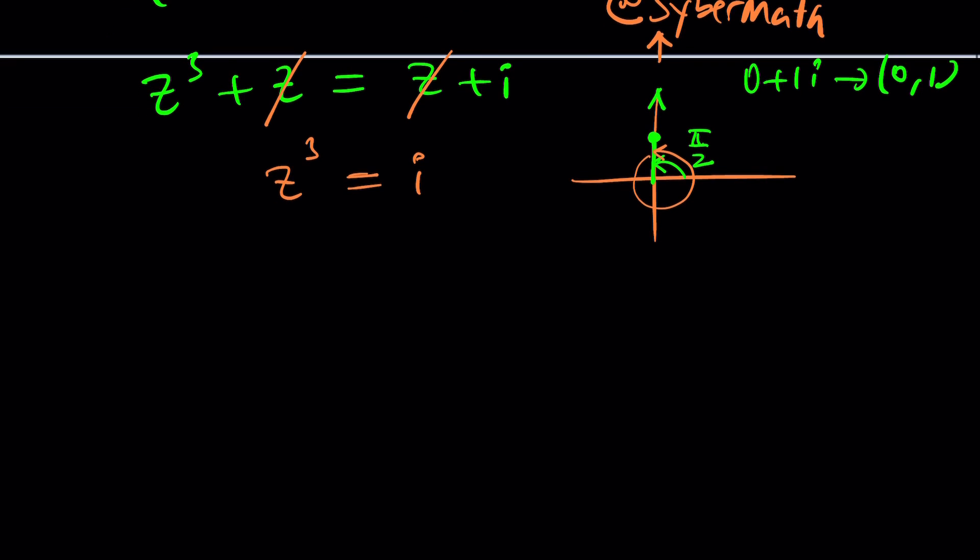So let's replace i with that and by the way any complex number can be written as r times e to the i theta, where r is the modulus or the absolute value and theta is the argument we just talked about. So in other words i can be written as one, which is its modulus one unit away from zero, times e to the power i times pi over two. That is the principal argument, the principal value and we're gonna have z cubed equals that.